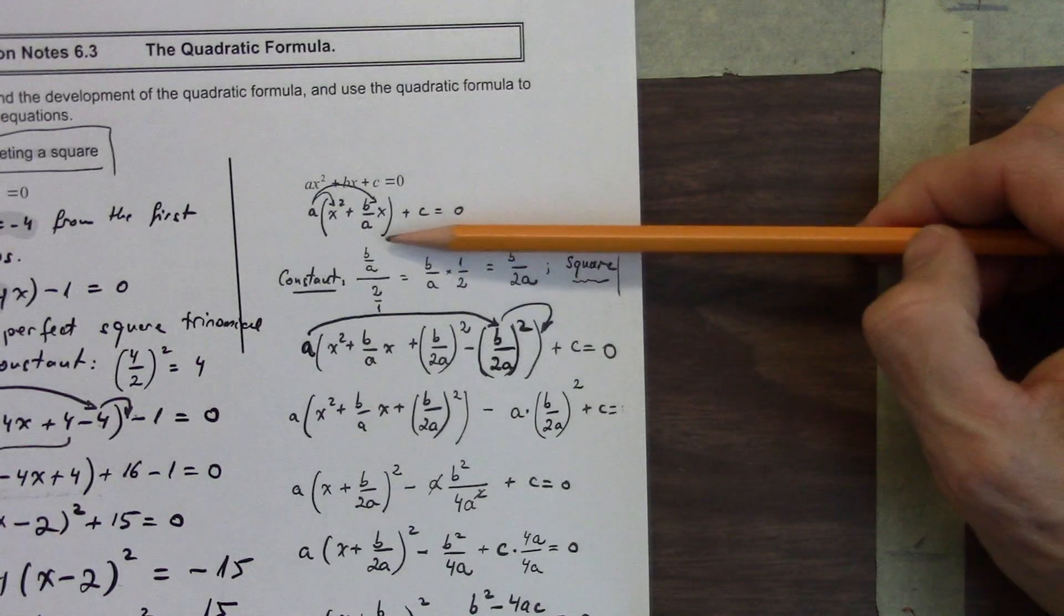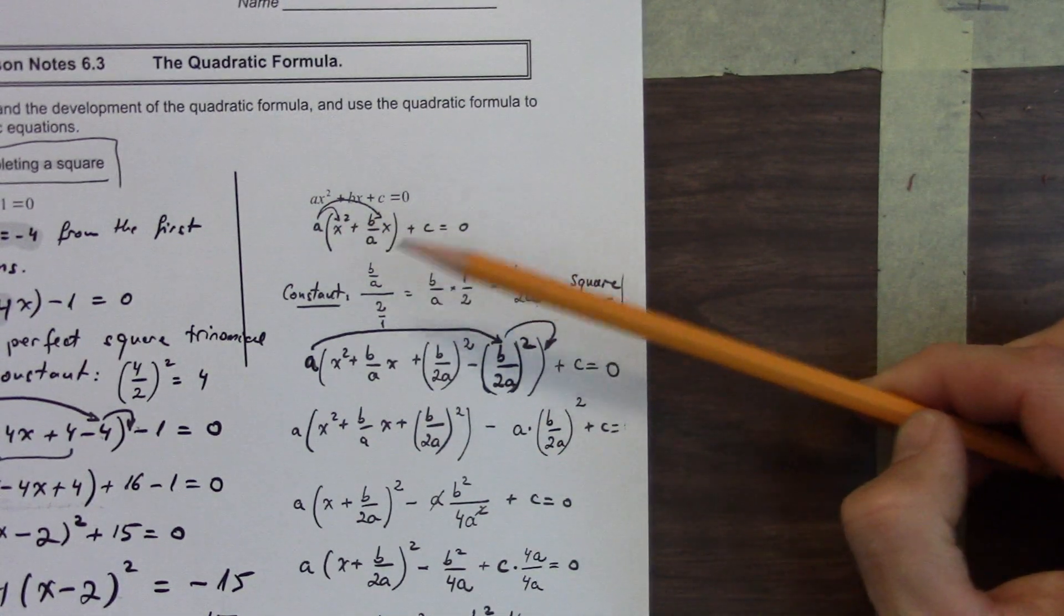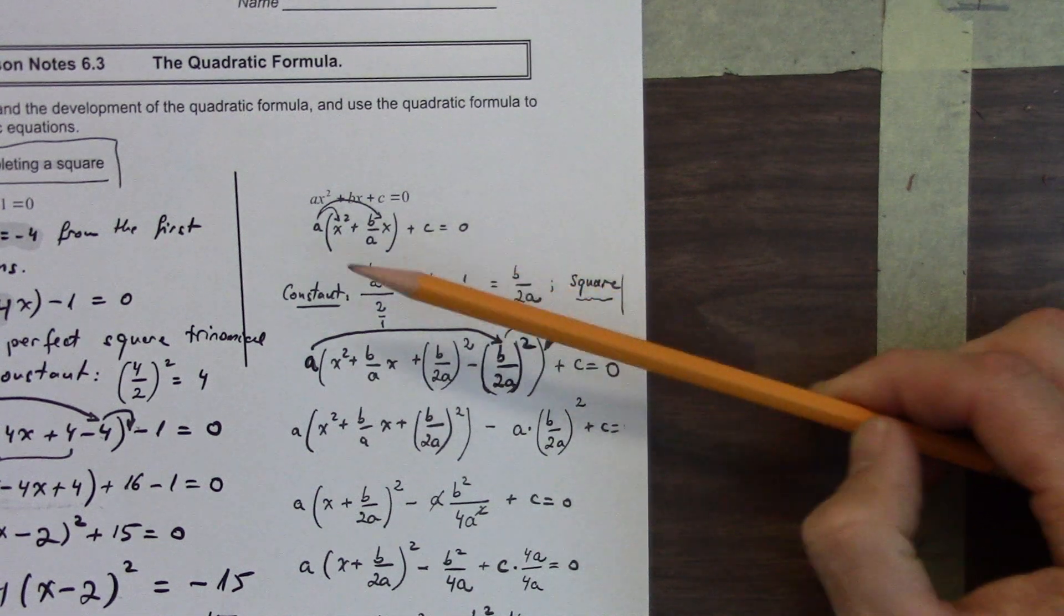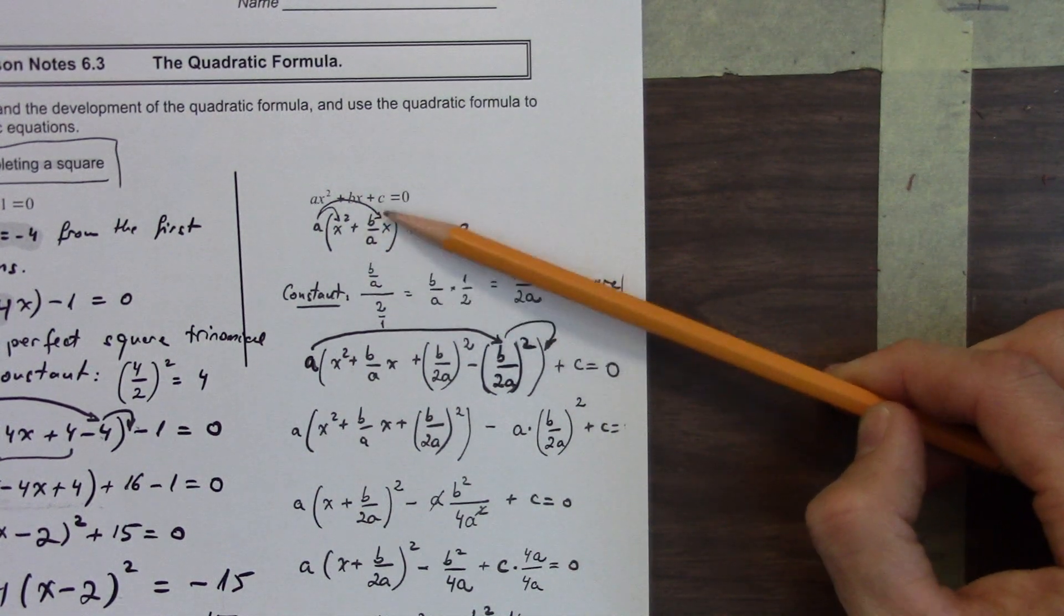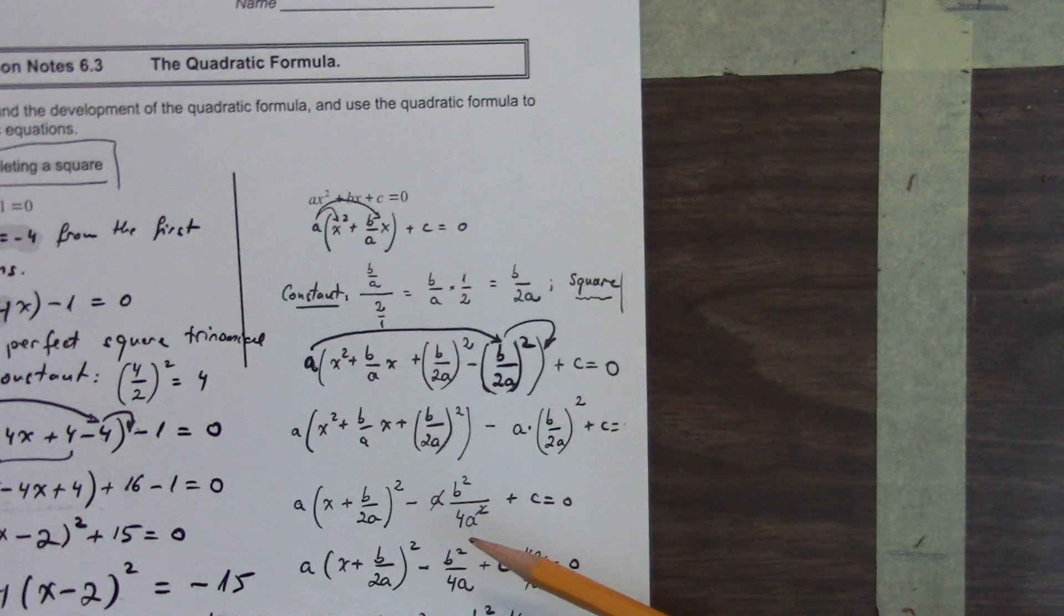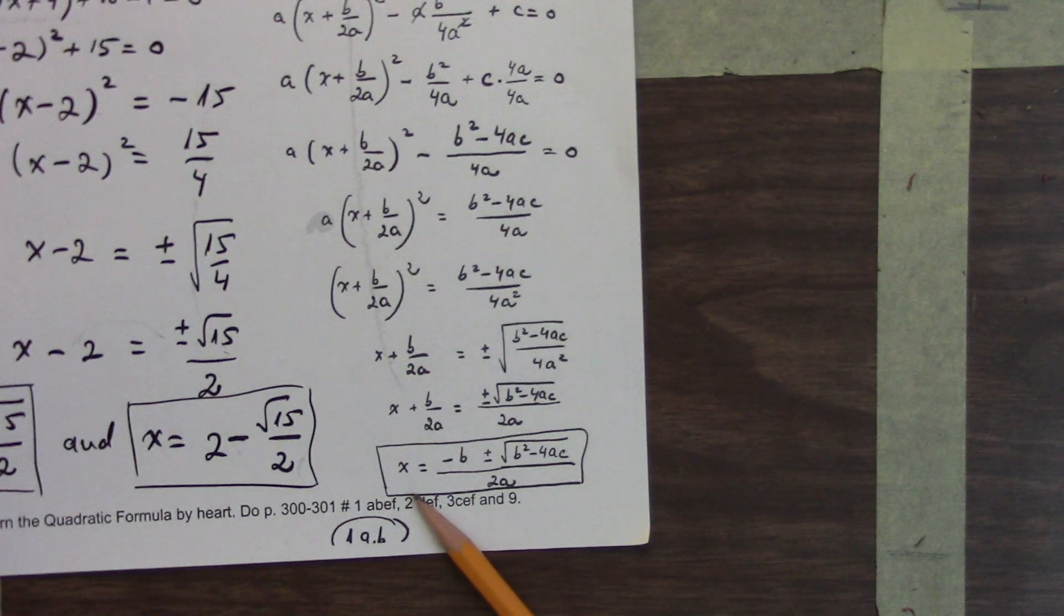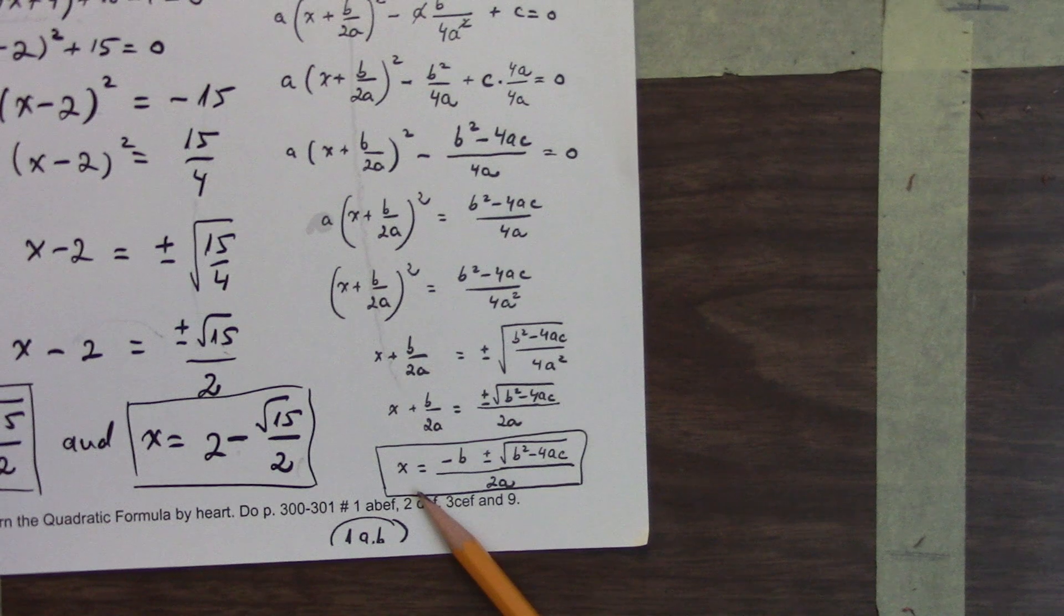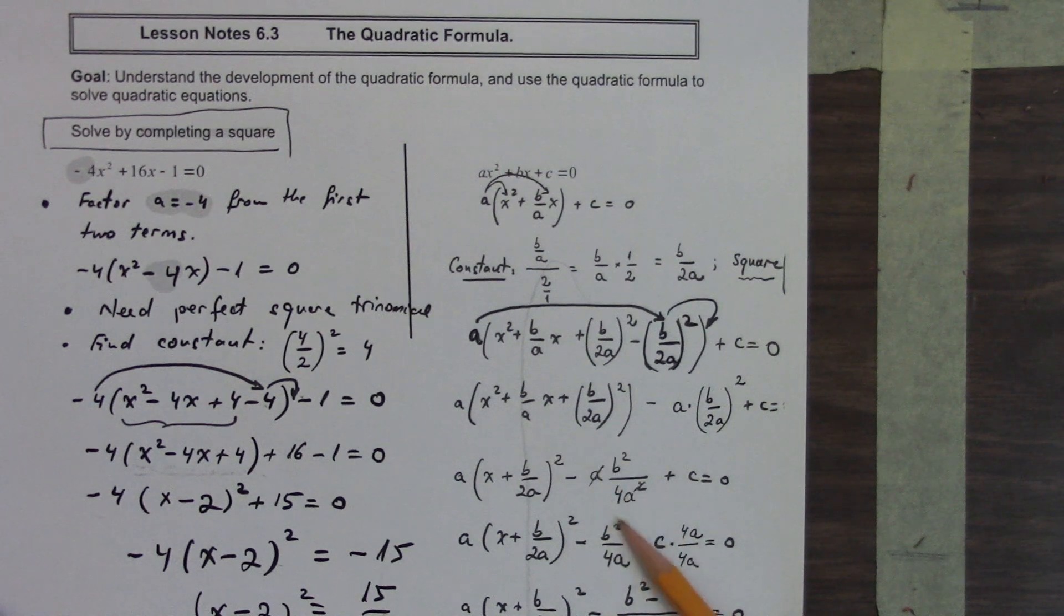We have our perfect square trinomial. We take the square root of the first term, square root of the second term. The middle sign drops down. We have our vertex form. Once we have our vertex form, we can then solve for x. We have plus or minus these two values, root 15 over 2. x equals 2 plus root 15 over 2 or x equals 2 minus root 15 over 2.